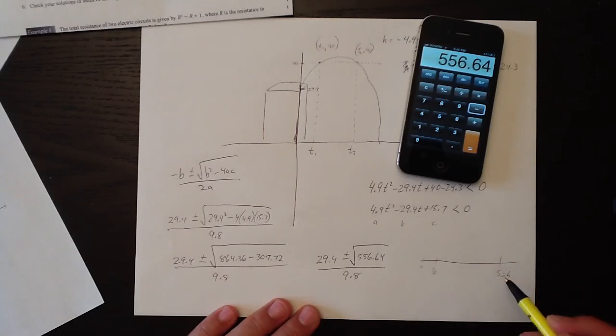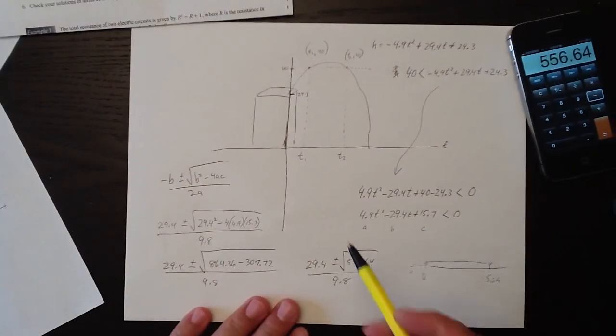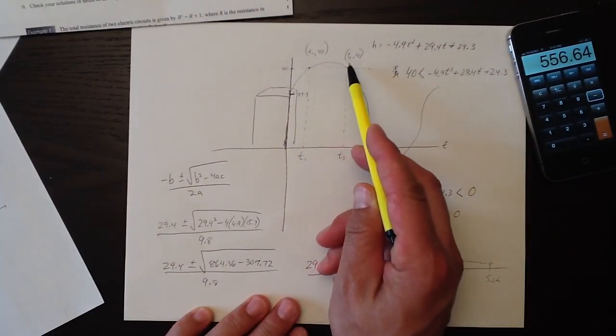We'll have whatever these two values are, the plus root whatever and the minus root whatever will give us two values on the number line. And we know it's going to be the span in the middle because we know rationally it's going to be the time when the ball is above those two points.